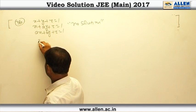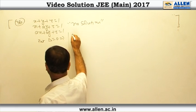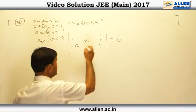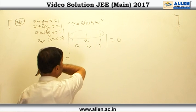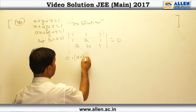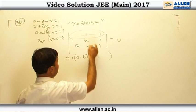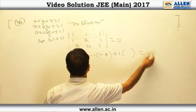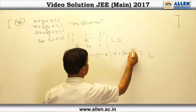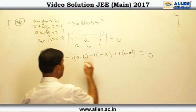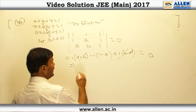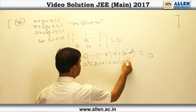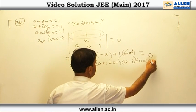So first we put delta equal 0. From there we find the determinant with rows (1,1,1), (1,a,1), (a,b,1) equal to 0. Expanding along the first row: 1 times (a minus b) minus 1 times (1 minus a) plus 1 times (b minus a squared) equal 0. On solving, we get a squared minus 2a plus 1 equal 0, which is (a minus 1) squared equal 0, giving a equal 1.